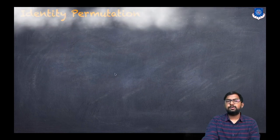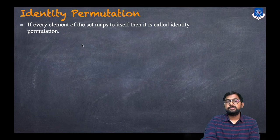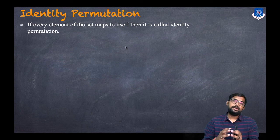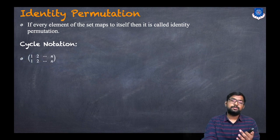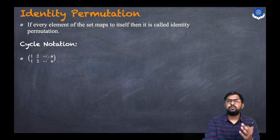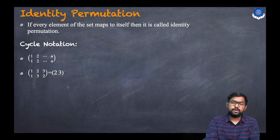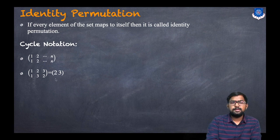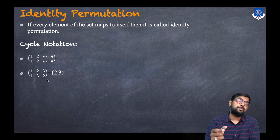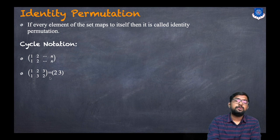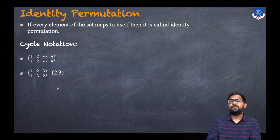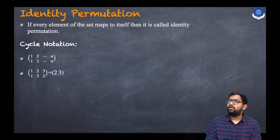The identity permutation is one where every element of the set maps to itself. In cycle notation, this is written as (1)(2)...(n), where 1 goes to 1, 2 goes to 2, and so on. For example, take the permutation (1 1 / 2 3 / 3 2). Here 1 goes to 1, so it forms a 1-cycle. Since 2 goes to 3 and 3 goes to 2, they form the 2-cycle (2 3). We don't write 1 because it maps to itself, which is obvious.